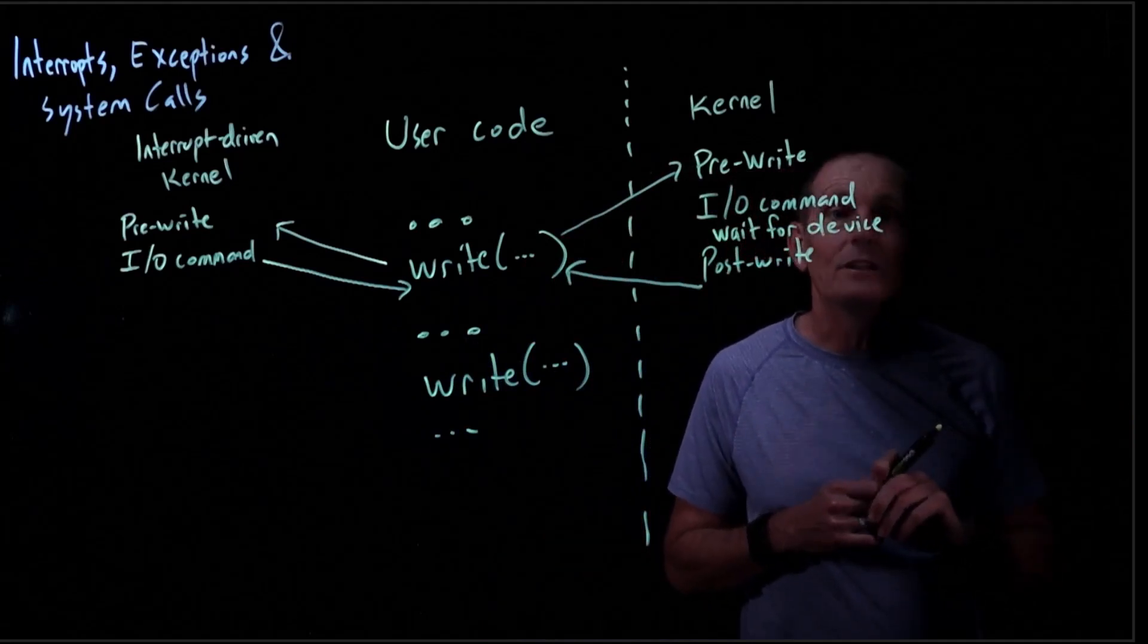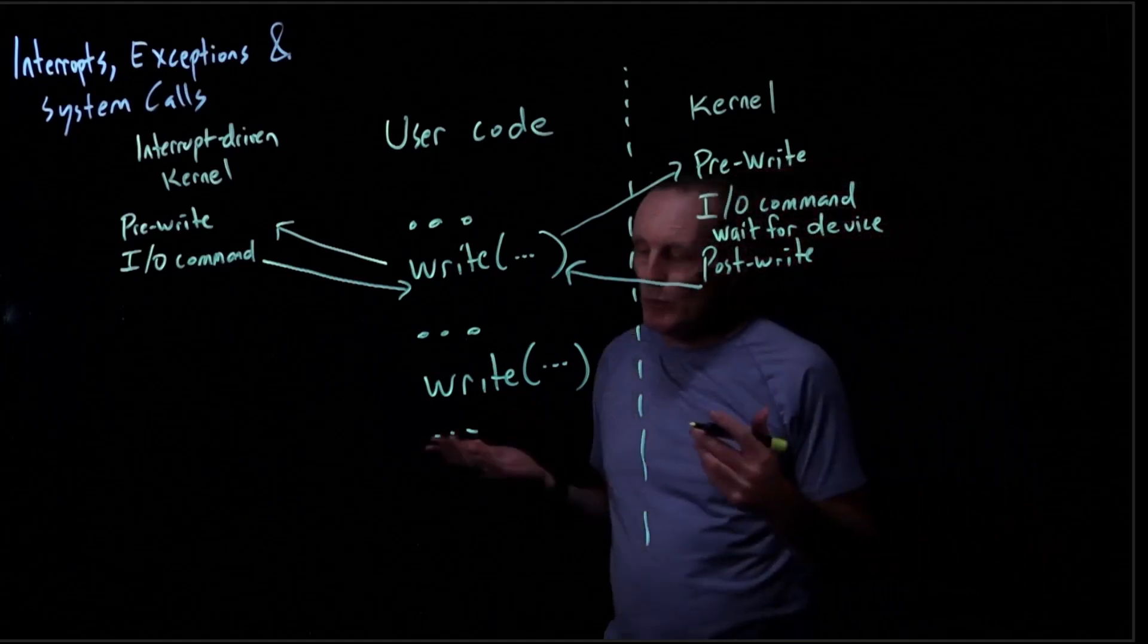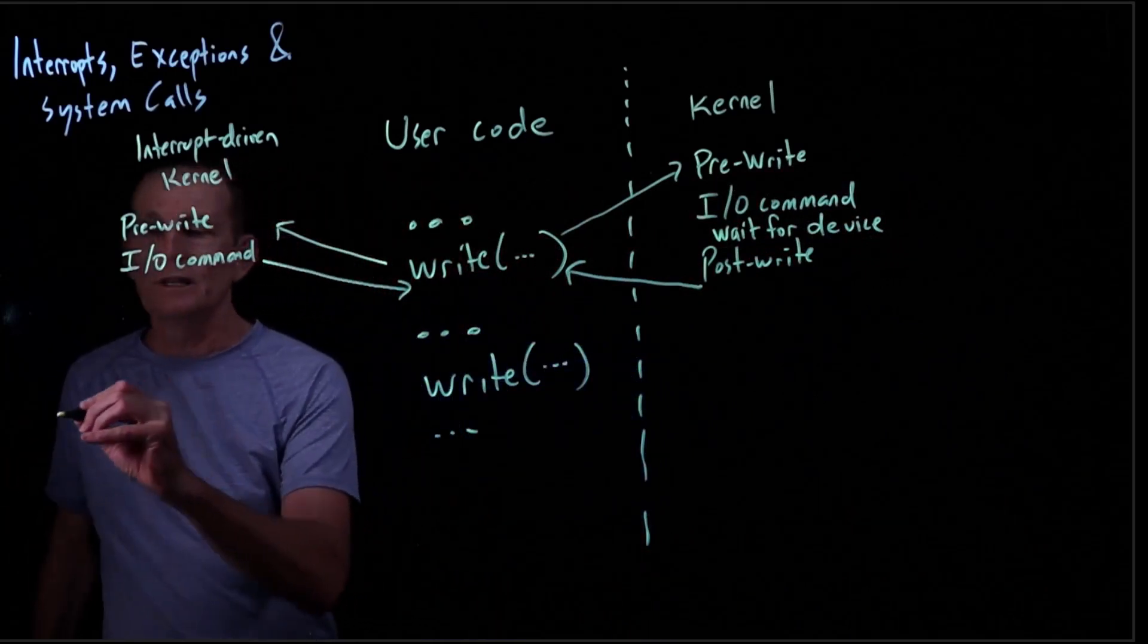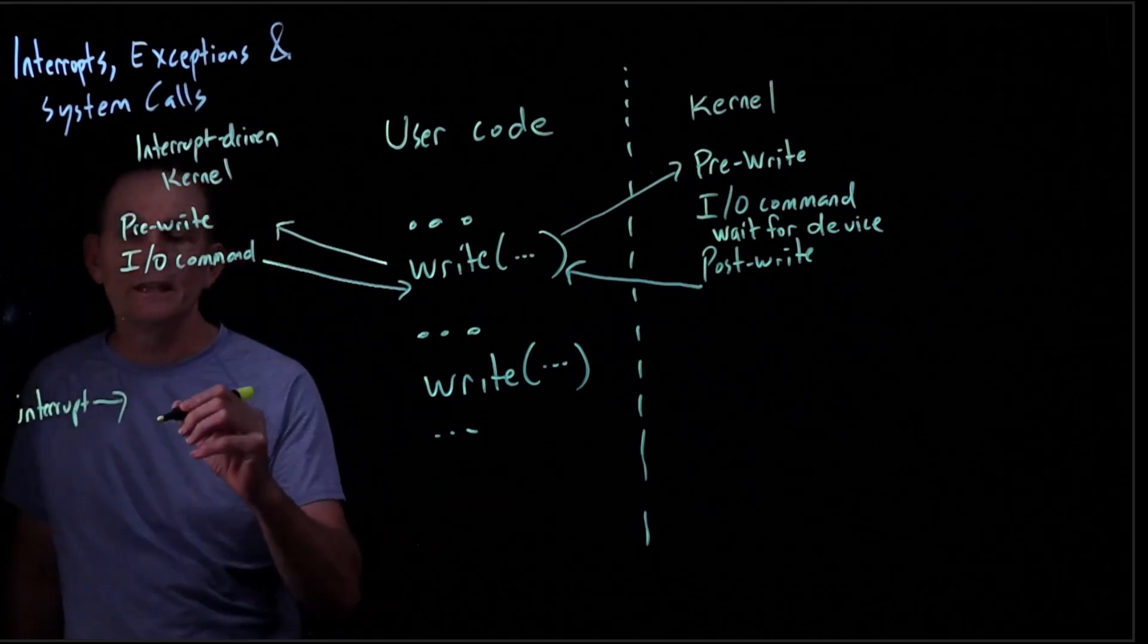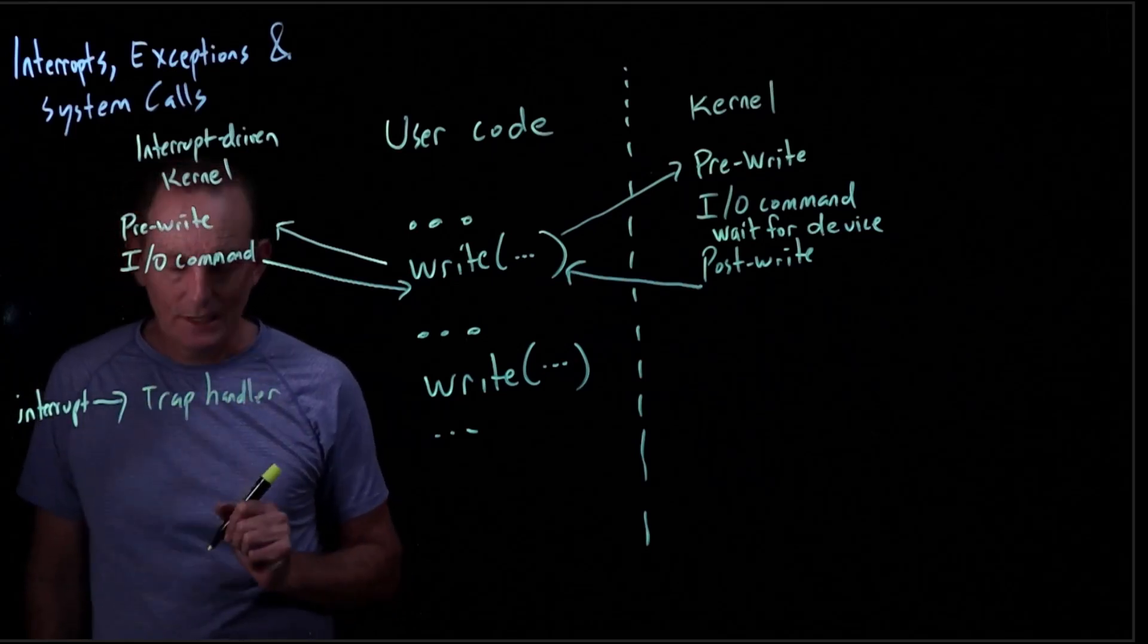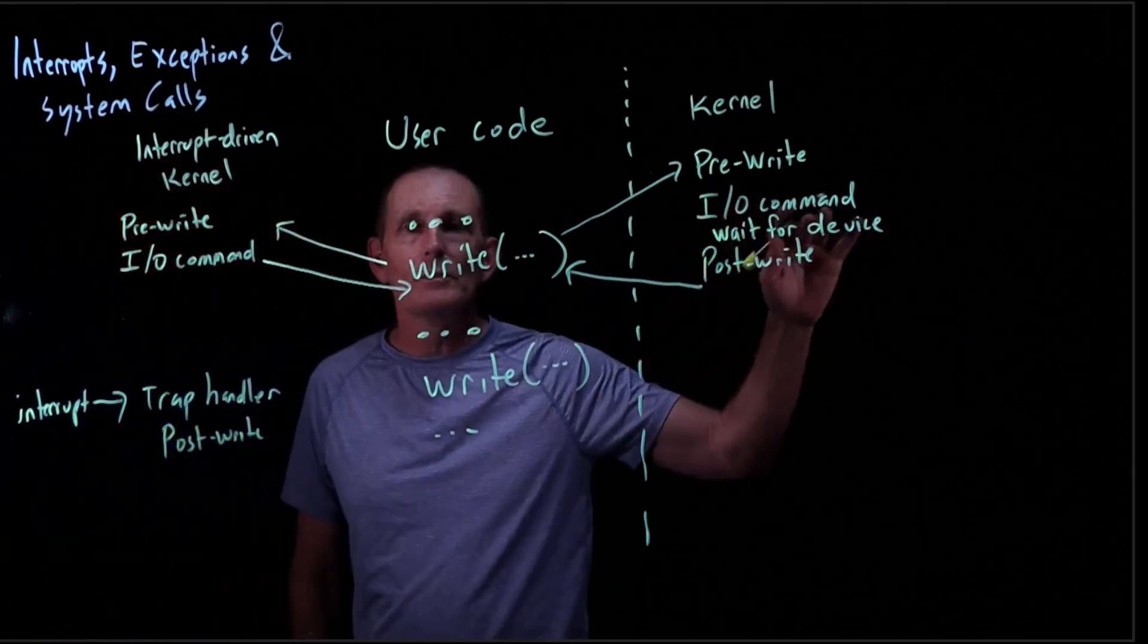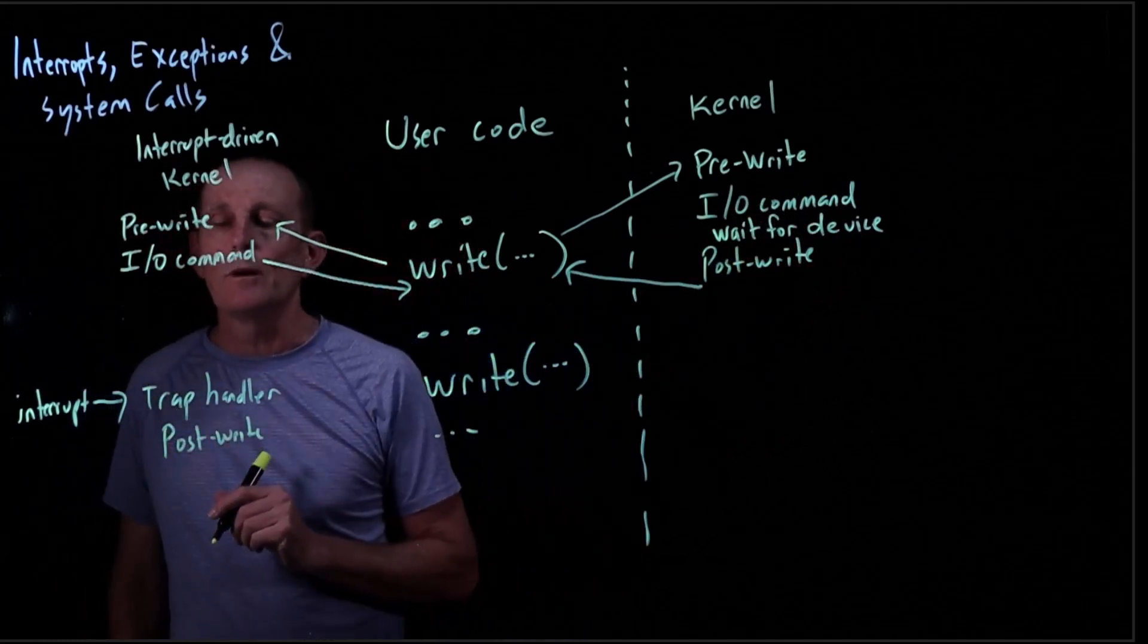The thing is, we want to know when the device is done. At some point, there's going to be an interrupt. That's going to tell us it's done. The interrupt comes in to the kernel, and the interrupt is going to go into the trap handler, which eventually is going to do the post write. Whatever was done after we know the disk was done, we're going to do in regard to the interrupt.